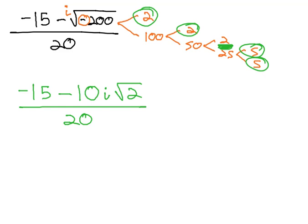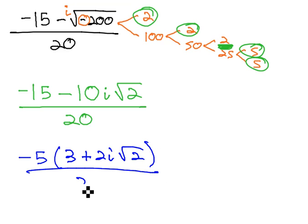Looking at this now, now we are able to factor that numerator, pulling out a common factor of negative 5, leaving behind 3 plus 2i root 2 over 20.